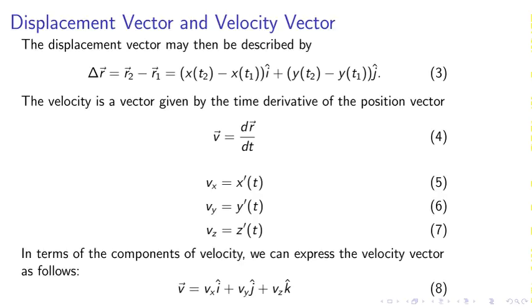We can take the velocity as the derivative of the position vector. So we have x prime of t, y prime of t, and z prime of t.